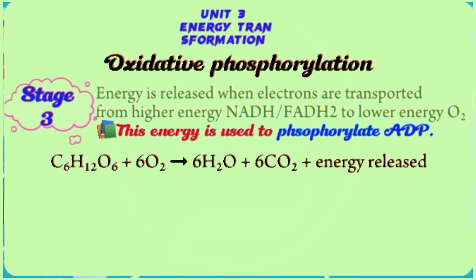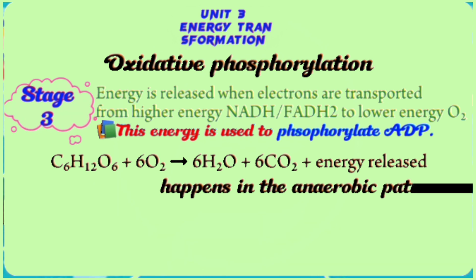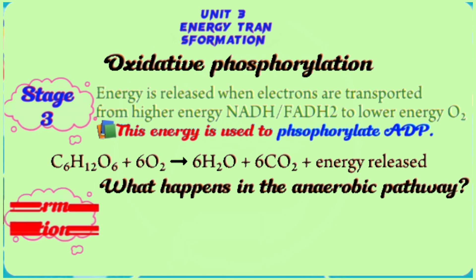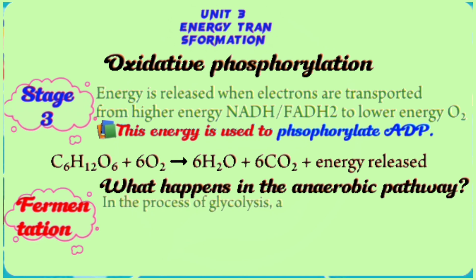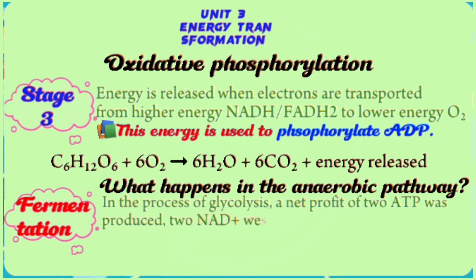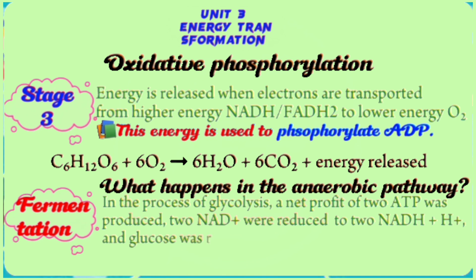The anaerobic pathway is called fermentation. In the process of glycolysis, a net profit of 2 ATP is produced. Two NAD+ are reduced to 2 NADH and the hydrogen ion, and glucose is split into two pyruvate molecules. This is what we call the glycolysis process.